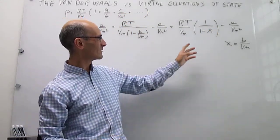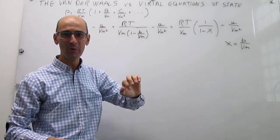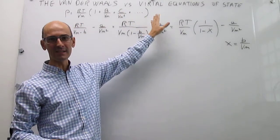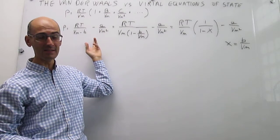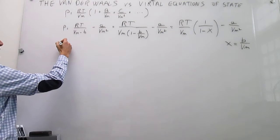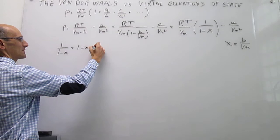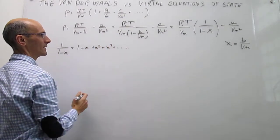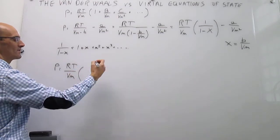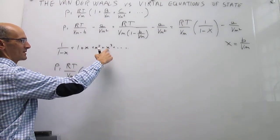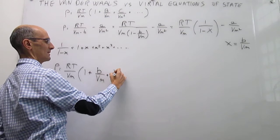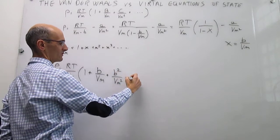I recognize that the 1/(1-x) term can be replaced with a Maclaurin series, giving an infinite expansion of terms. That's really how the connection between the Virial Equation of State — which has an infinite number of terms — and the Van der Waals Equation of State is made. The Maclaurin expansion gives 1 + x + x² + x³ + …, so P equals RT over V_M times (1 + b/V_M + b²/V_M² + …), and we continue indefinitely.